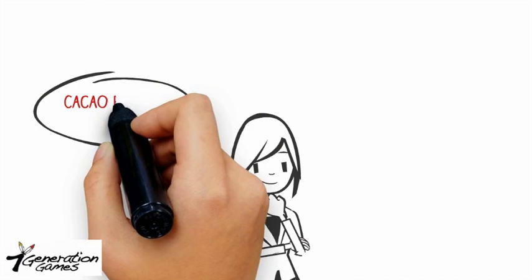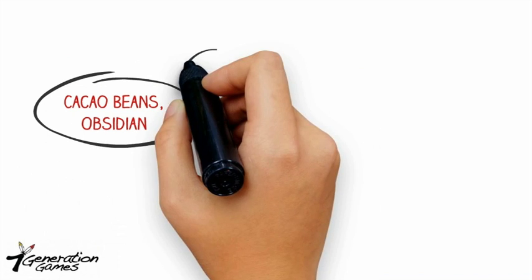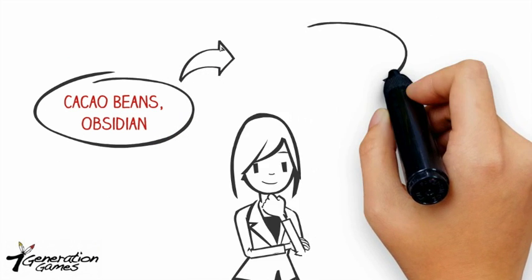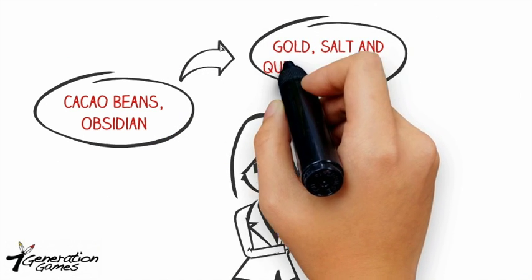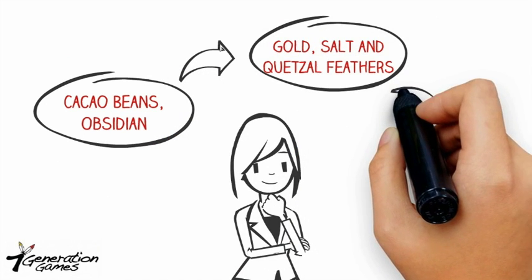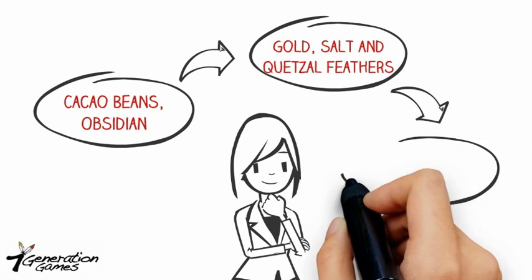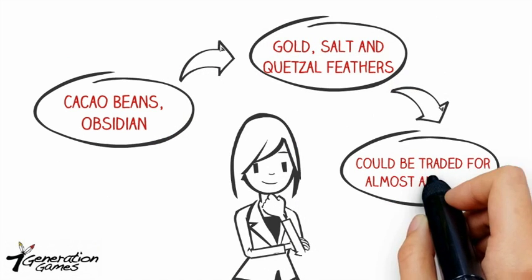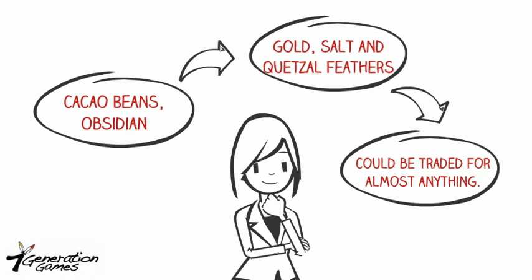Cacao beans, obsidian, gold, salt, and Quetzal Feathers could be traded for almost anything.